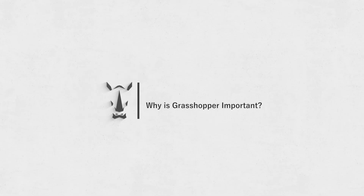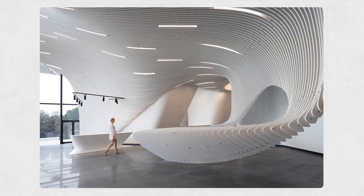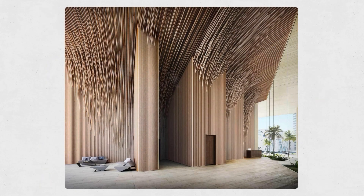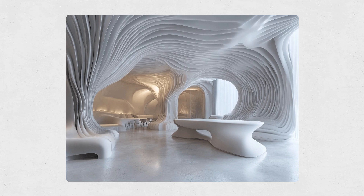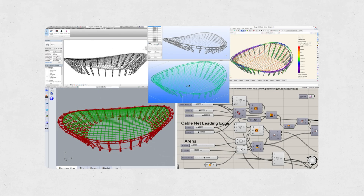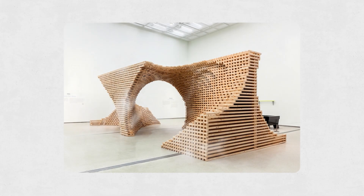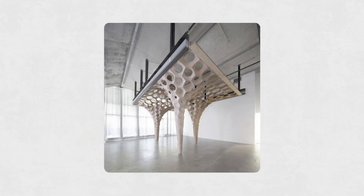Why is Grasshopper important? In architecture and interior design, Grasshopper lets you create complex and unique forms that are nearly impossible to make using traditional methods — from intricate curves and shells to organic dynamic roofs, all built with just a few nodes and parameters. In engineering and structural design, you can optimize geometries and structural networks, analyze weight and strength, and simulate everything before actual construction. In digital art and design, you can create captivating patterns, digital installations, parametric sculptures, and even digital fashion.